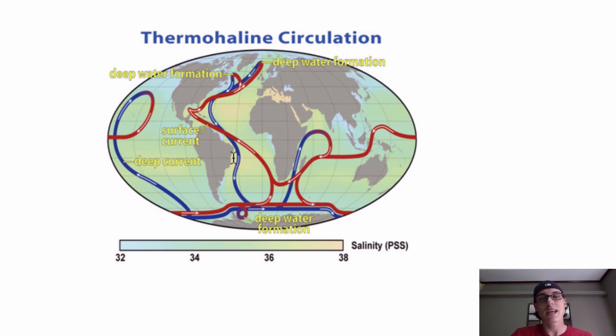So that's the main idea with the name itself, thermohaline circulation. The density gradient is what drives the deep water through its ocean basins. Now, before I get too far ahead of myself, let me just describe what's happening.